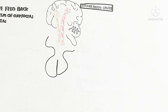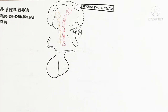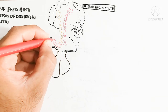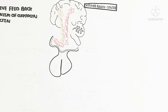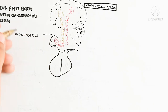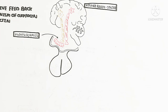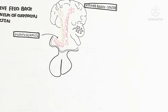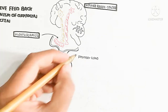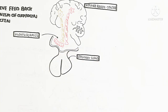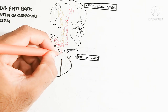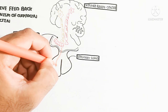The somatosensory cortex nerves are stimulated by neurotransmitter release. The hypothalamus is part of the brain, and the pituitary gland produces endocrine hormones. The pituitary gland contains three lobes; we will discuss two: the adenohypophysis, which is the anterior lobe, and the neurohypophysis, which is the posterior lobe.